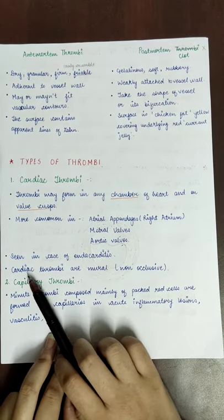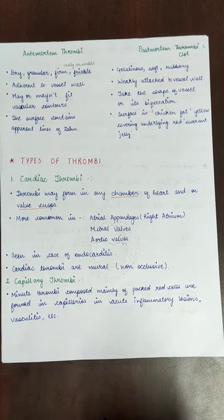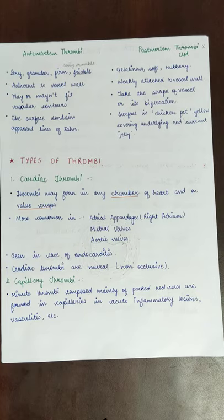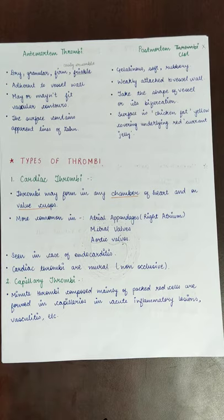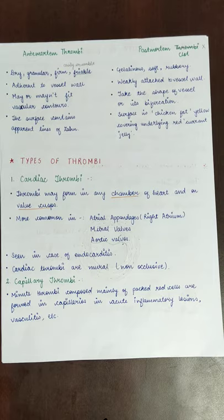There are four types of thrombus. First is cardiac thrombi — these are mural, meaning non-occlusive; they do not completely block the lumen. Second is capillary thrombi — these are basically packed with red cells, formed in capillaries in acute inflammatory lesions and vasculitis. Minute thrombi composed mainly of packed red cells are formed in capillaries in acute inflammatory lesions and vasculitis and other conditions.